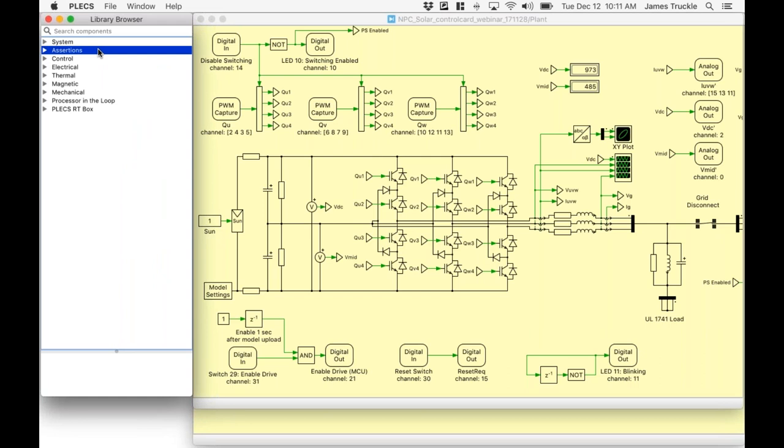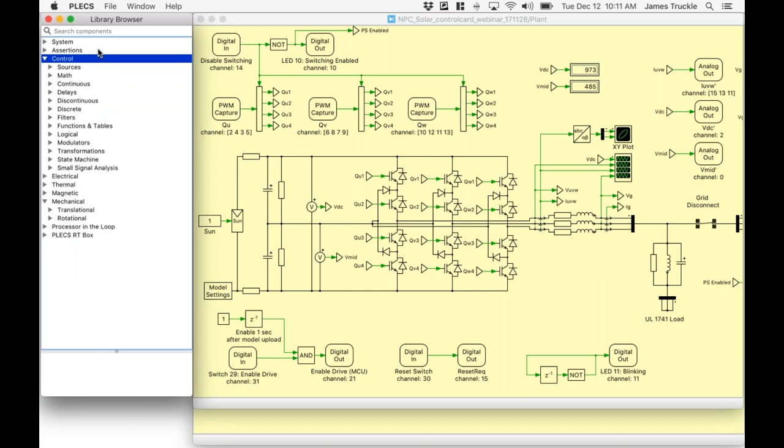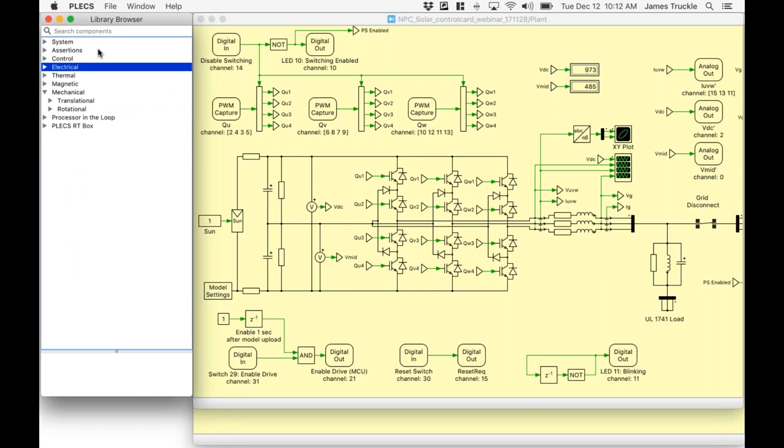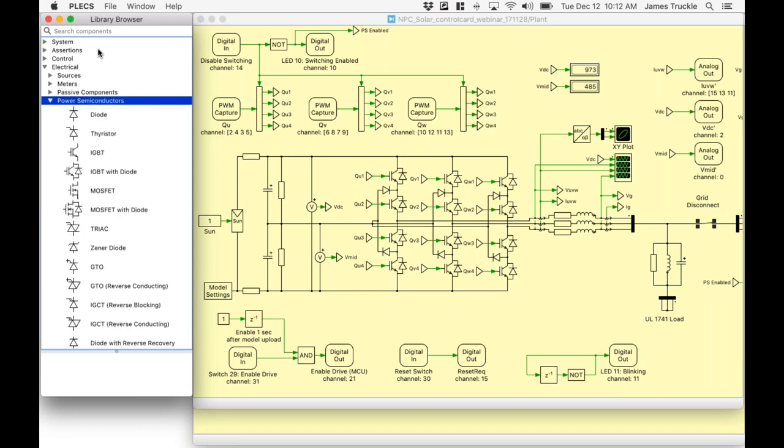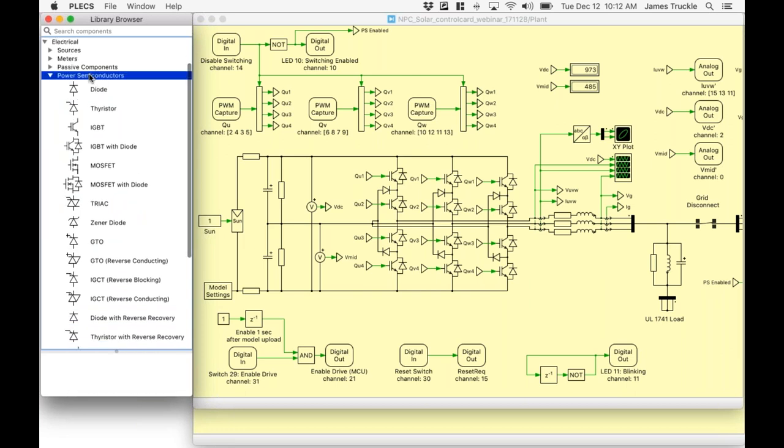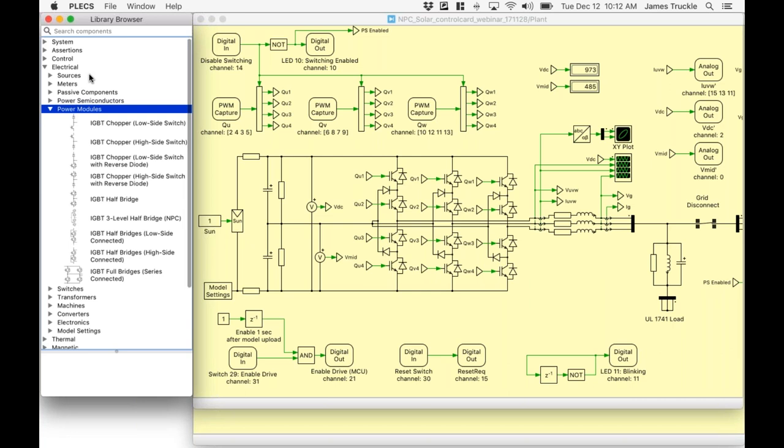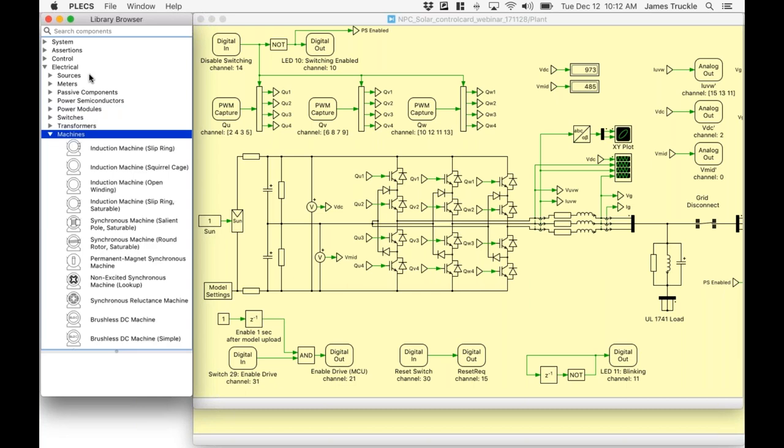Here we see a PLECS model and the component library browser. The library browser here on the left contains a complete set of blocks for modeling a power conversion system and its controls, and includes multiple physical domains such as our thermal domain, magnetic domain, and mechanical domain with translational and rotational components. I mentioned the complete controls library as well. The electrical library includes a set of passive components and also a set of idealized power semiconductors. Also included are a set of pre-built power modules and a set of electric machines.